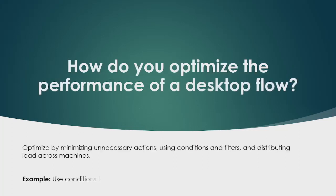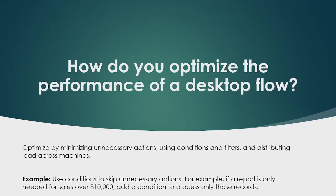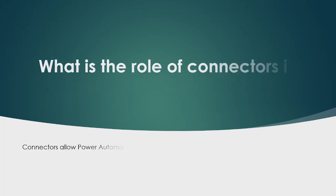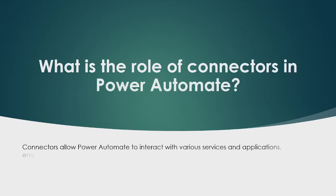The next question is: how do you optimize the performance of a desktop flow? To optimize performance, you can minimize unnecessary actions, use conditions and filters, and distribute load across machines. For example, use conditions to skip unnecessary actions — if a report is only needed for sales over $10,000, add a condition to process only those records.